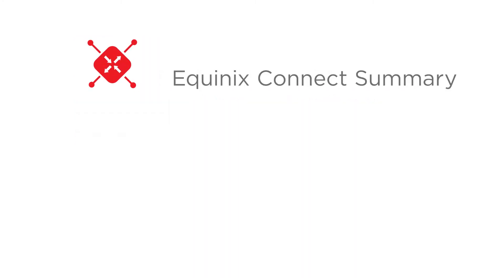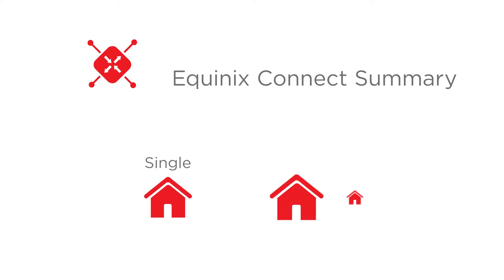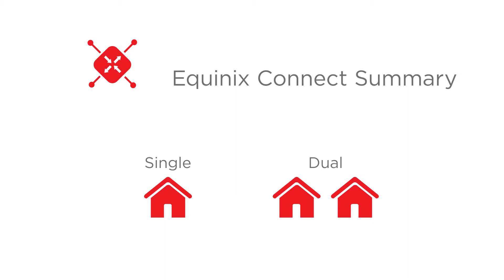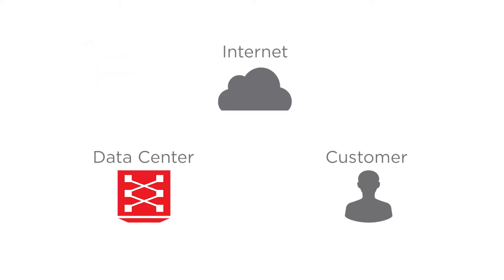Equinix Connect is a direct internet access product providing managed single or dual-homed internet service for platform Equinix customers. It's easy, scalable, and quick to provision. When a customer sets up their environment in our data center, they almost always need some form of internet access.